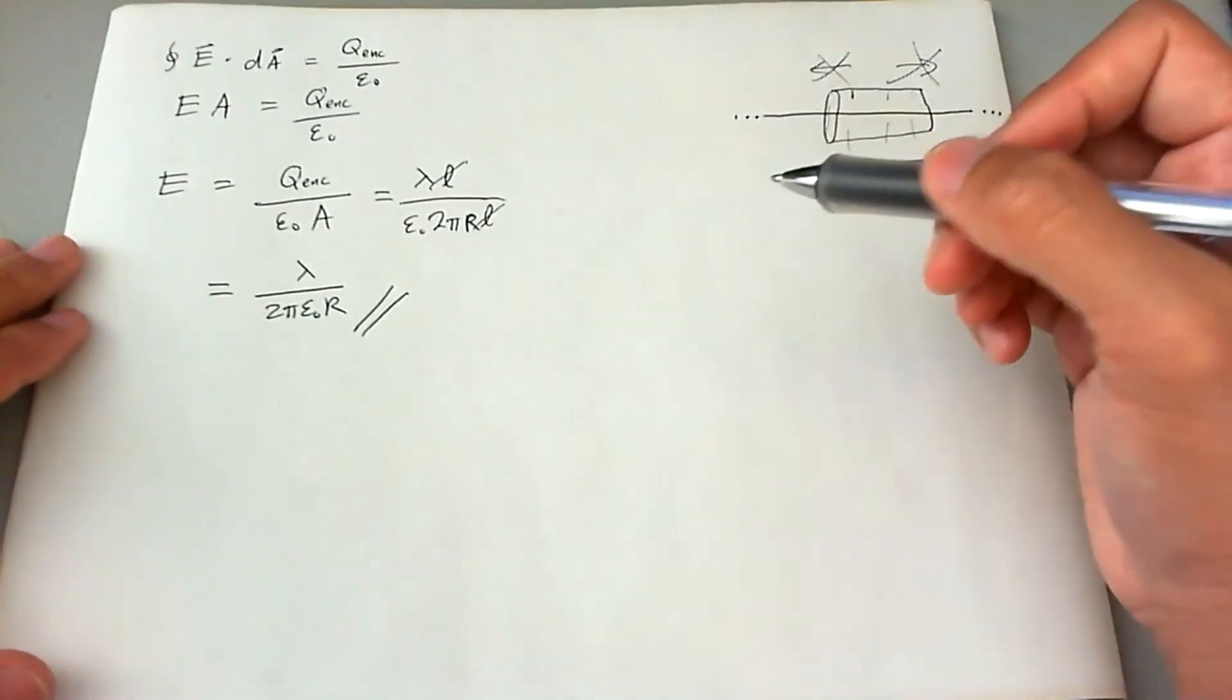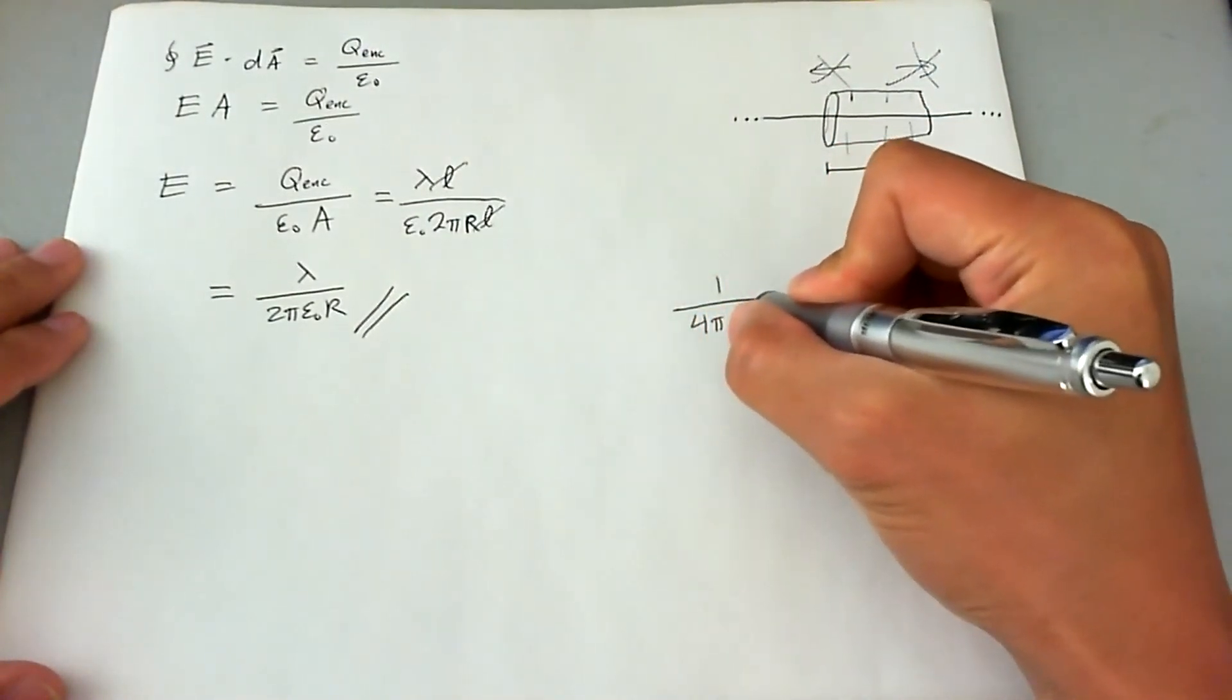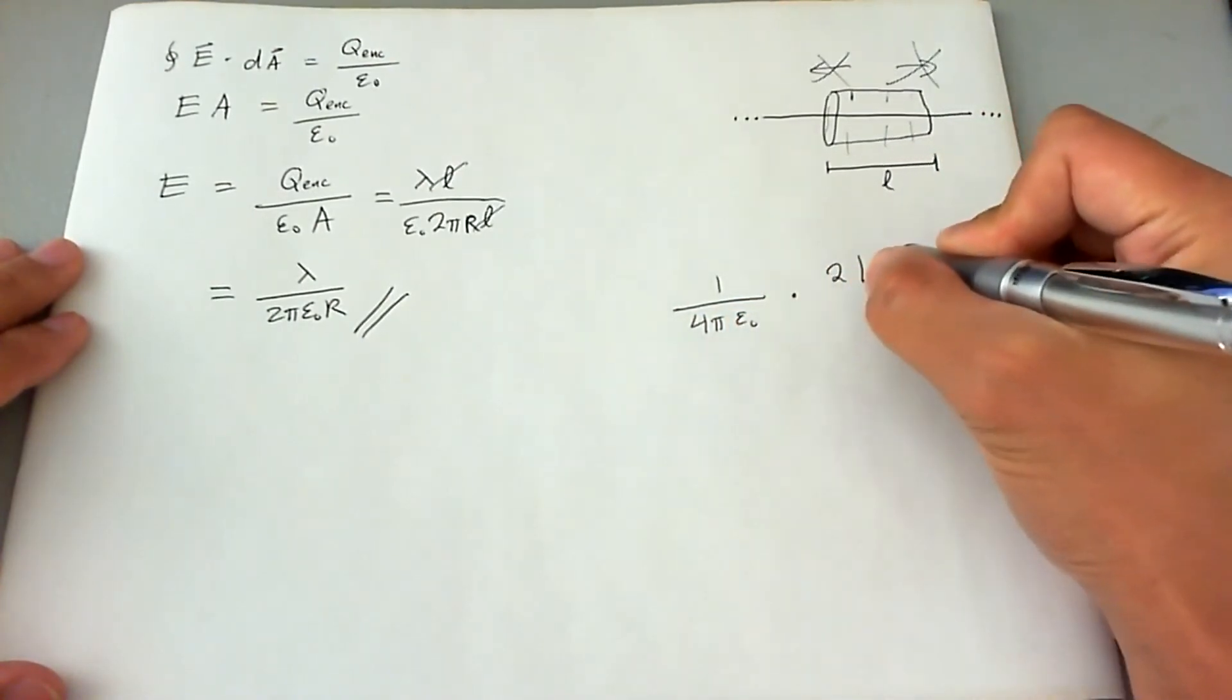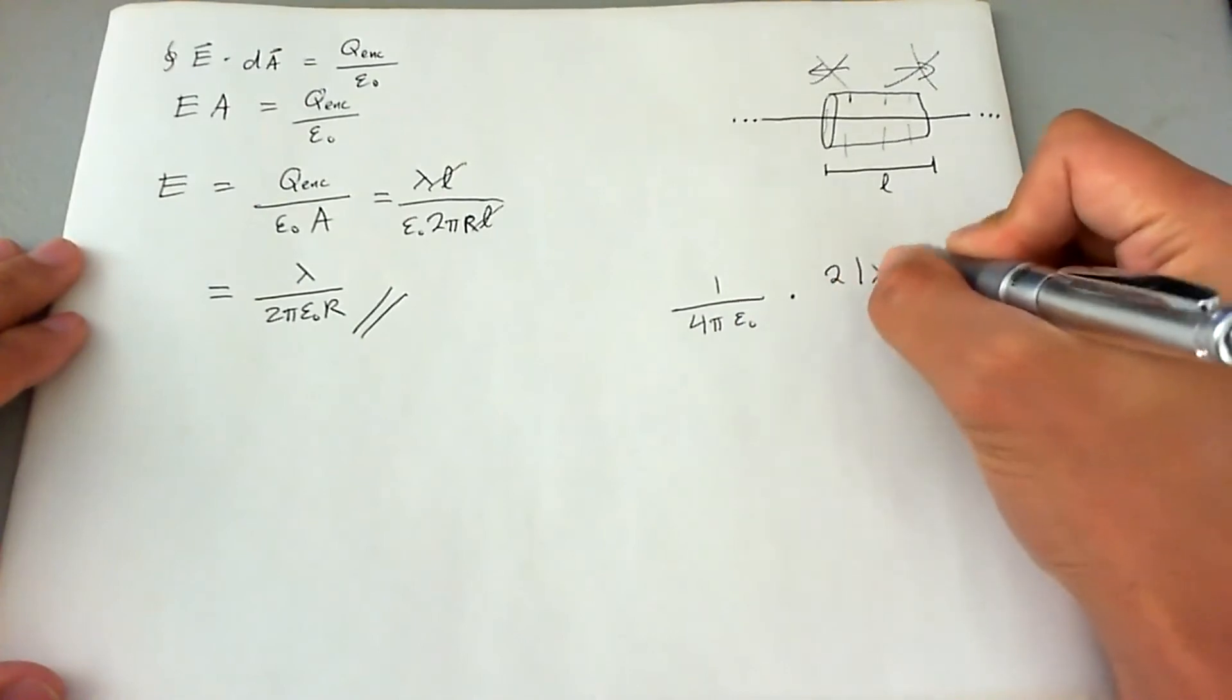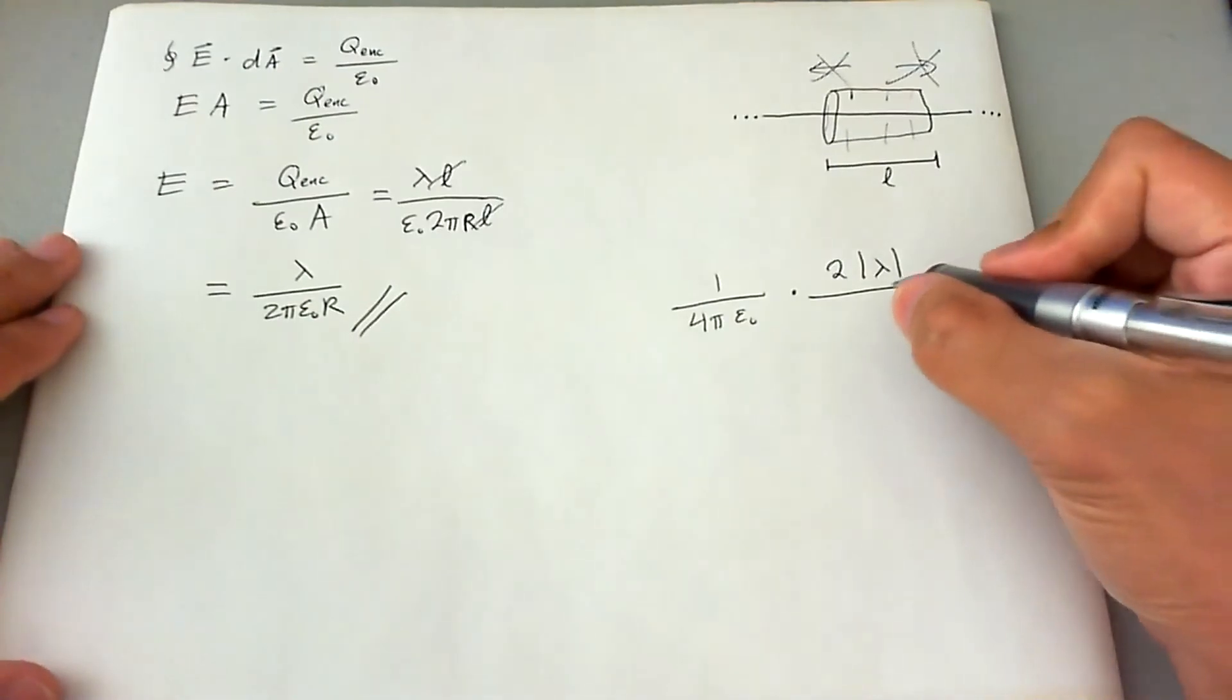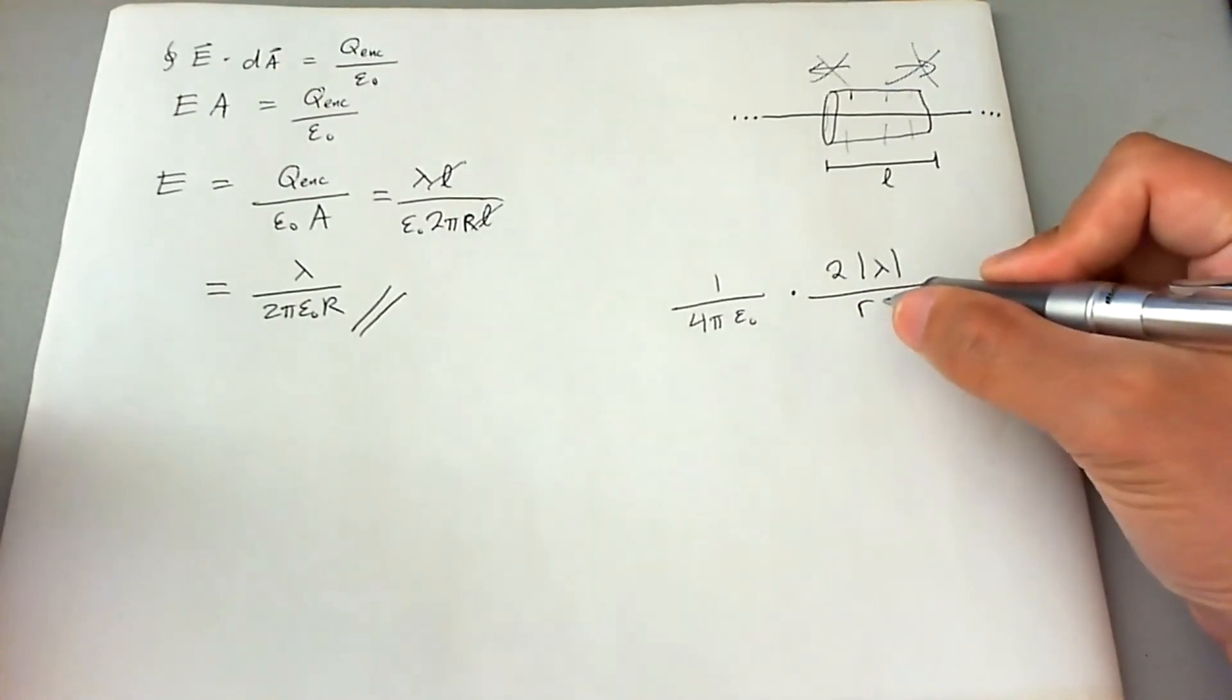Now, if you remember back in the lecture, the E field near an infinite line charge is 1 over 4 pi epsilon naught times 2 lambda, absolute value of lambda. So whether it's positive or negative, it doesn't matter, divided by r, which is the distance from that line charge.